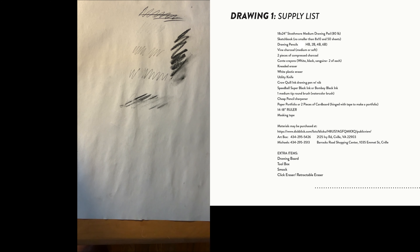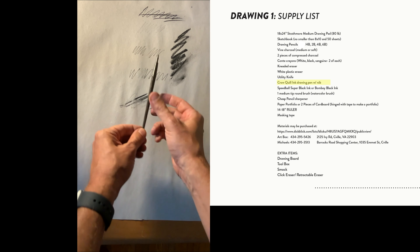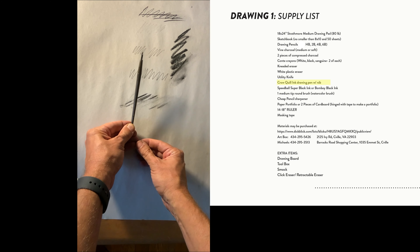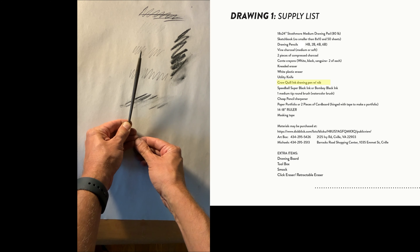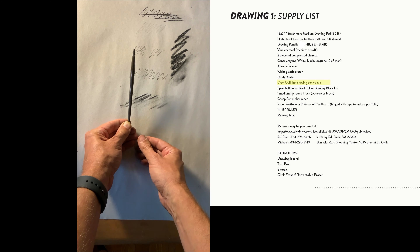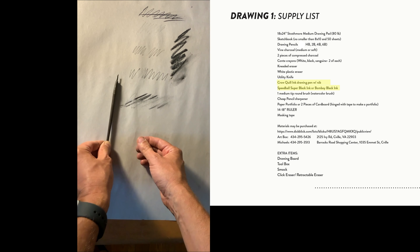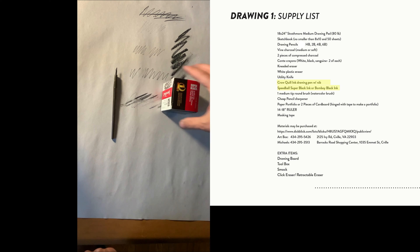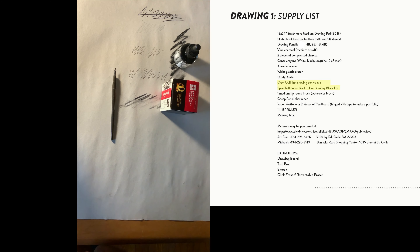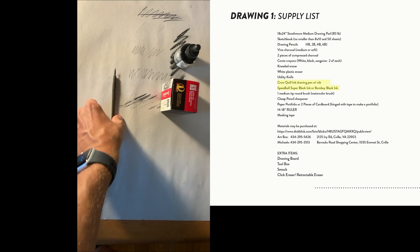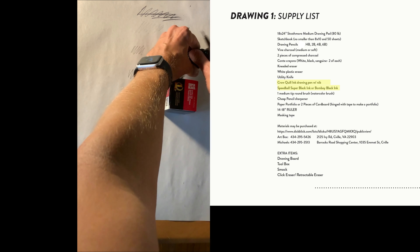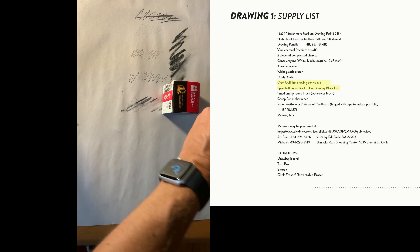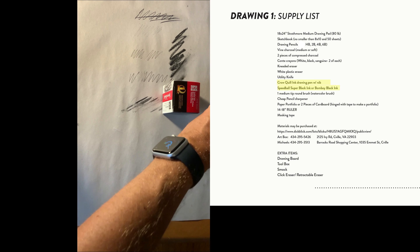Next is a crow quill, which is a simple quill pen used for ink and pen-and-ink drawings. We're going to use either Super Black or Bombay Black ink — these are the two ink types to get. We'll be drawing more calligraphic lines with this ink.